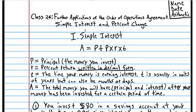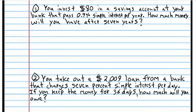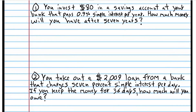You invest $80 in a savings account at your bank that pays 0.9% simple interest per year. How much money will you have after seven years? So let's start by writing the formula.